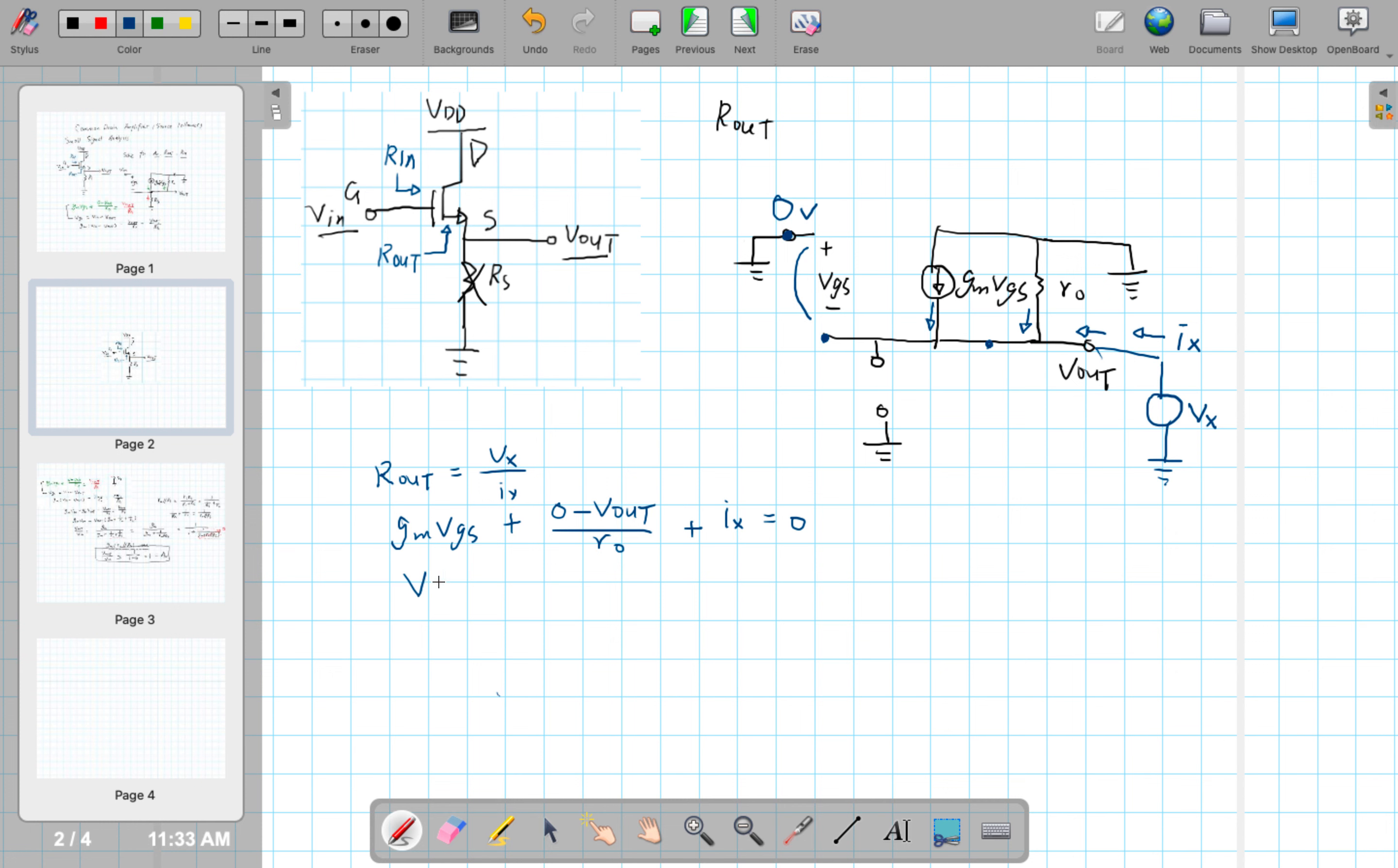So we can say VGS equals to the 0 volts, which is the voltage at this node, minus the voltage at this node, which happens to be the Vout, which also happens to be the Vx. So that equals to minus Vx. And also we know that Vout equals to Vx. Now let's try to solve these three equations.